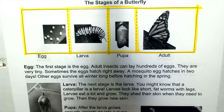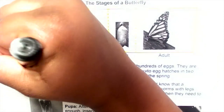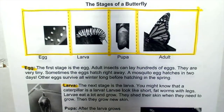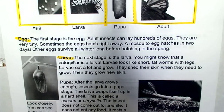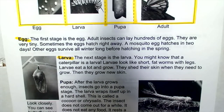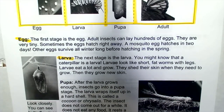The next stage is the larva. You may know that a caterpillar is a larva. A larva looks like sharp fat worms with legs. A larva eats a lot and grows. They shed their skin when they need to grow, then they grow new skin.